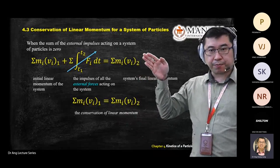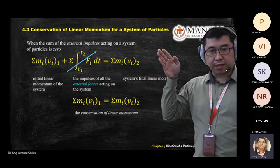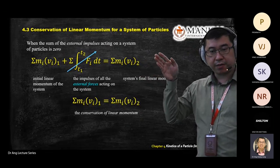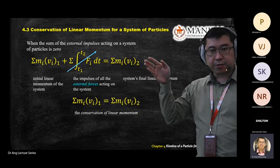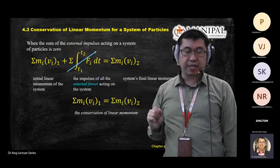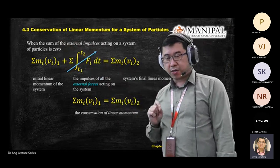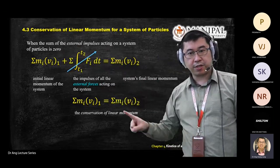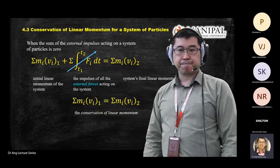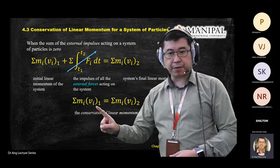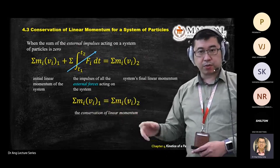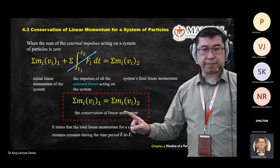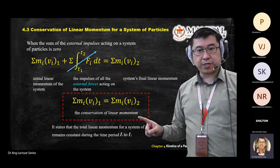This equation is called conservation of linear momentum. There's a difference from what we learned previously: the principle of linear momentum and impulse includes the impulse term. But when the question asks you to use conservation of linear momentum, you use this equation — momentum before equals momentum after. You no longer look at impulse. This is a very important equation.